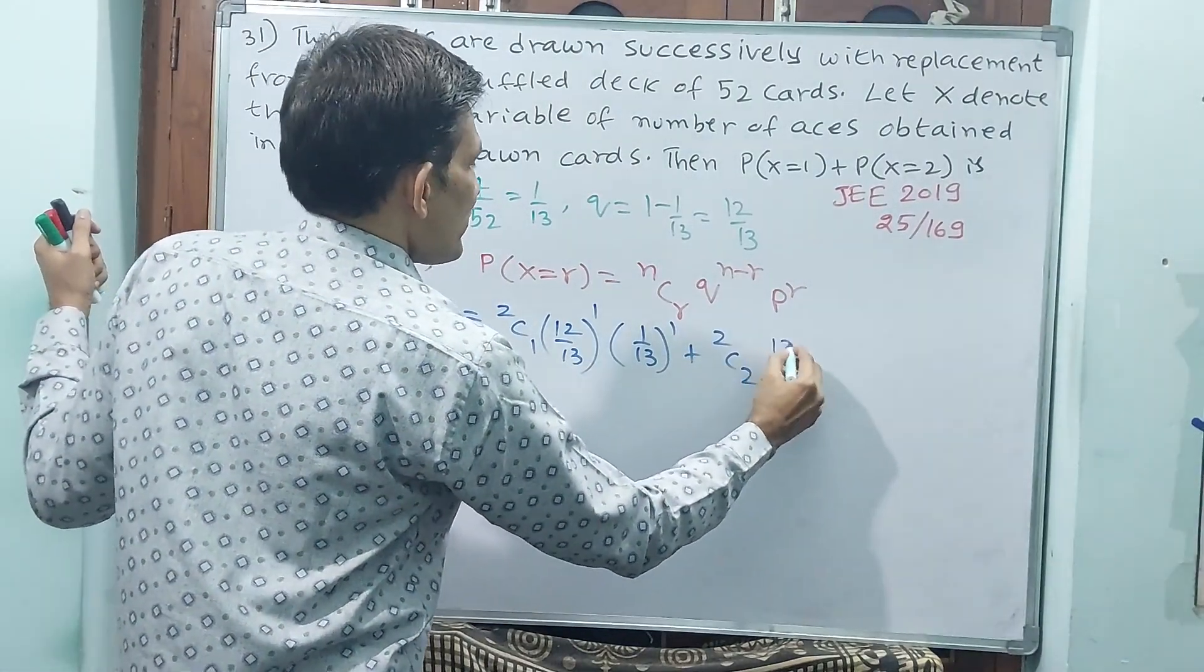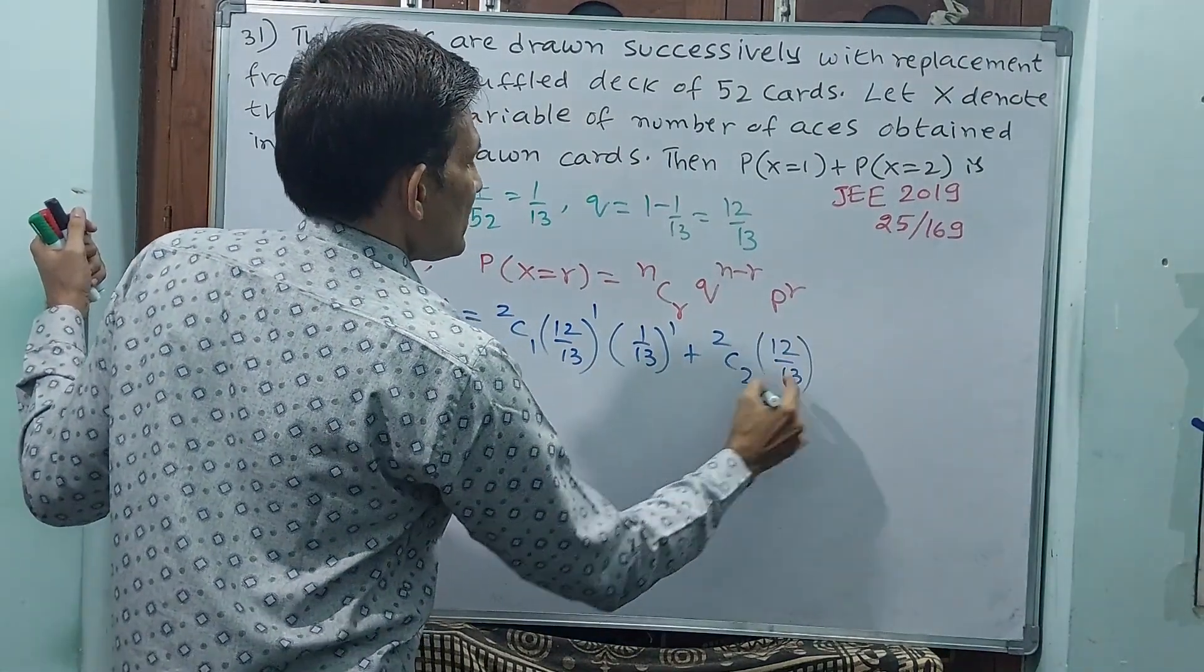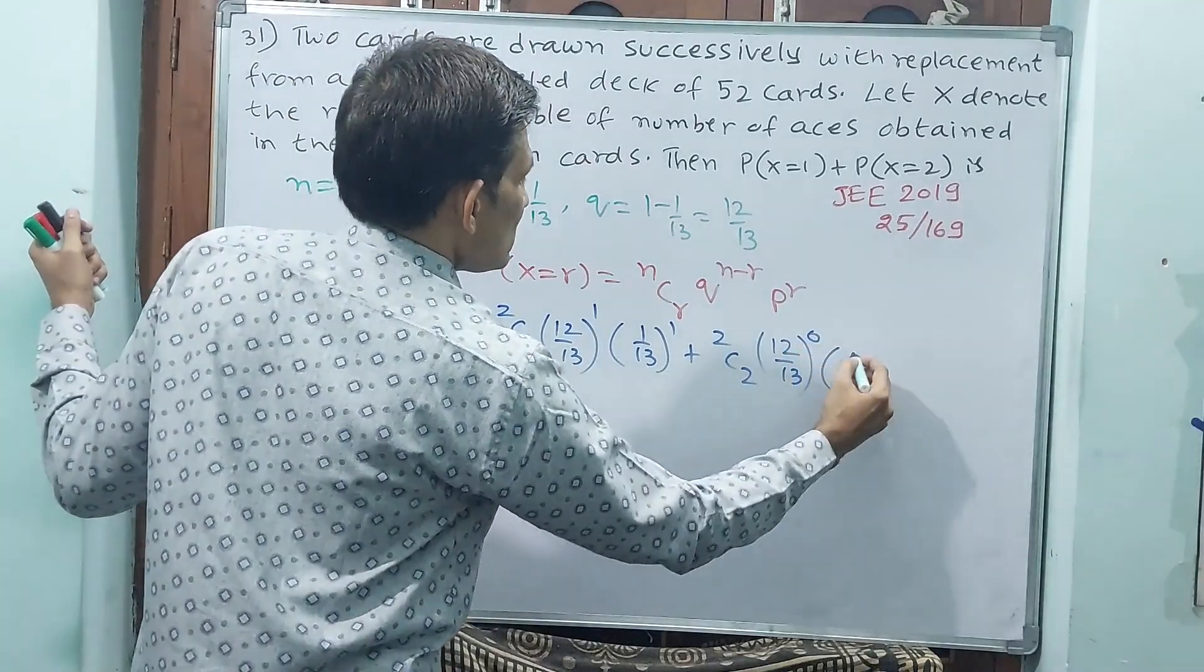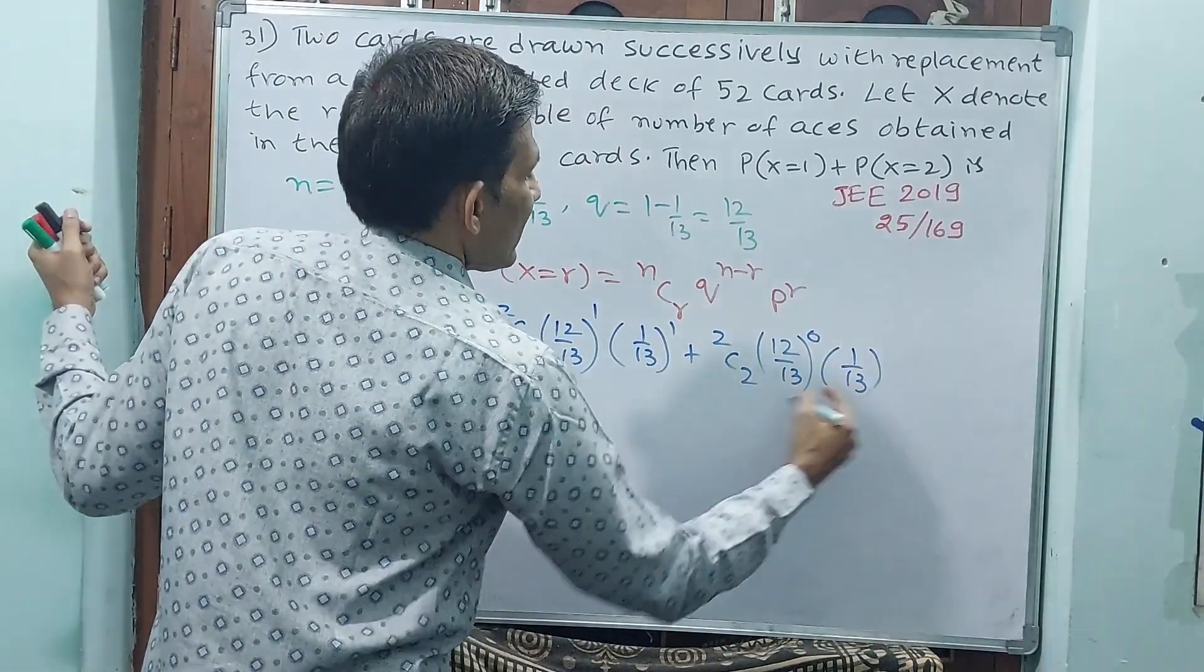Now, 2C2, 12 by 13 power 2 minus 2, that's 0, and 1 by 13 power 2. Okay?